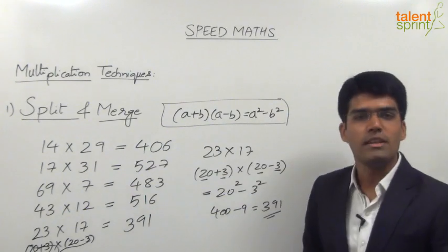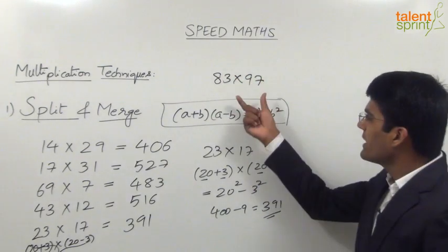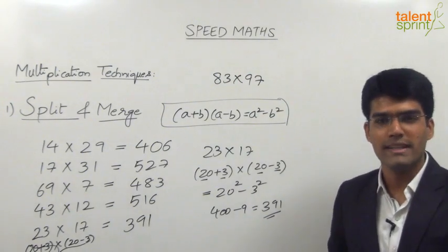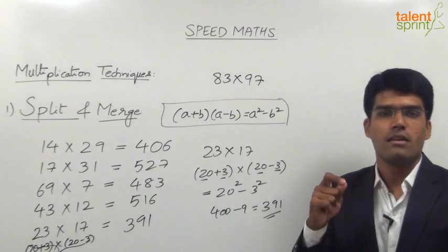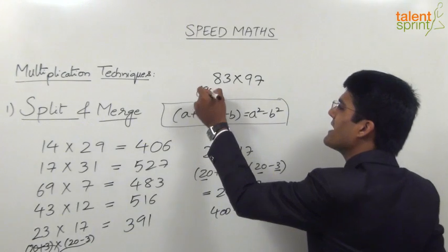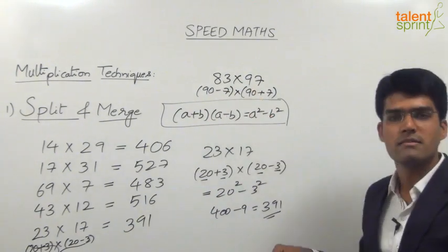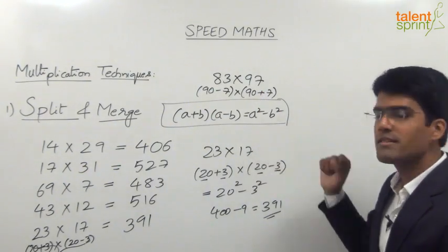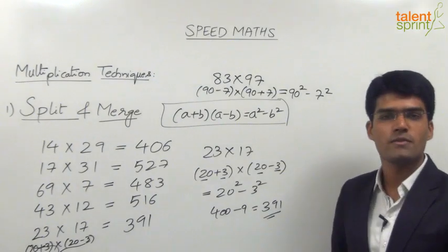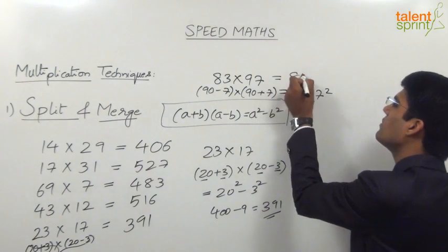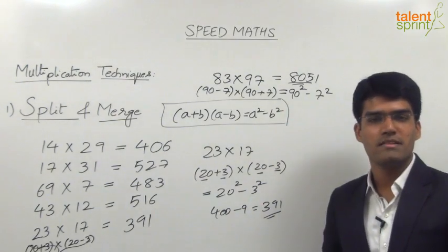Let us take a few more examples to understand the application of this formula. For example, 83 into 97 appears difficult and split and merge is not easy, but with the right idea — (a + b)(a - b) — this can be answered in just two to three seconds. 83 can be taken as 90 minus 7, and 97 as 90 plus 7. So the answer is 90² - 7² = 8,100 - 49 = 8,051.